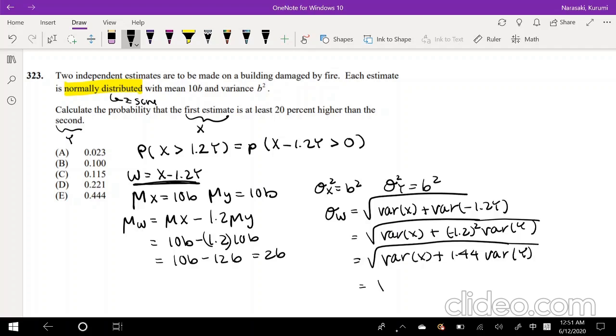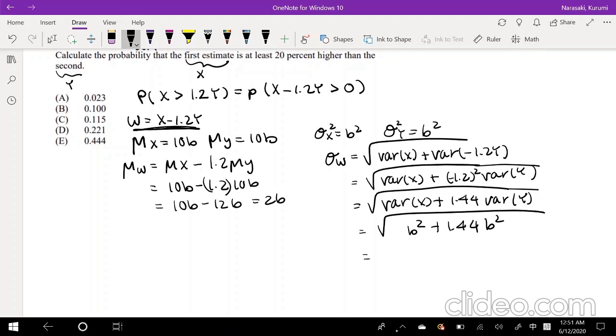All righty, we know everything now. We know the variance of X is B squared, plus 1.44 times the variance of Y is still B squared. So we can actually factor the B squared out. So it becomes B times square root of 1 plus 1.44, and this becomes square root of 2.44. So that's pretty simple, right?